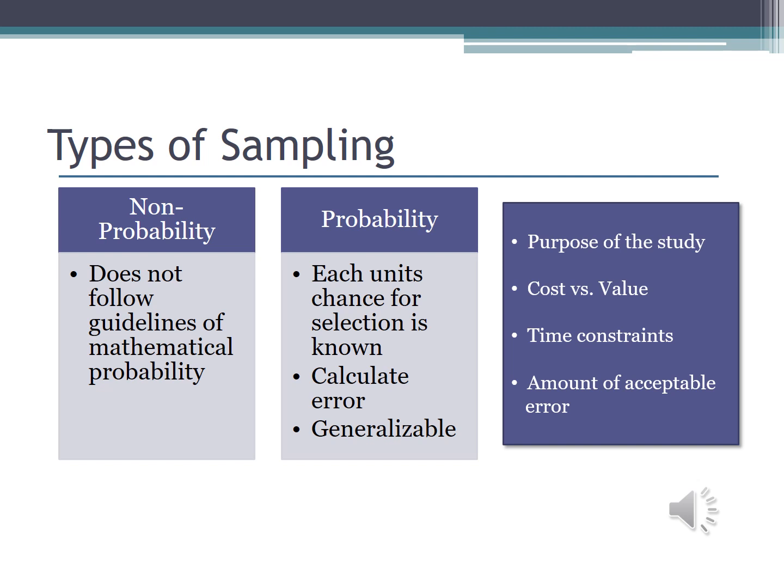Probability sampling is the opposite. Everybody in the overall population has an equal chance of being selected. I can calculate the error based upon how many people respond to my call for participants, and because everybody in the overall population had a chance to respond, I am better able to generalize to the larger population. To decide which route to take, determine the purpose of the study. If you're just trying to conduct a pilot study and test your questionnaire for reliability, why not go with a non-probability convenience sample? But if you're really trying to get your finger on the pulse of the university as a whole, better go probability.